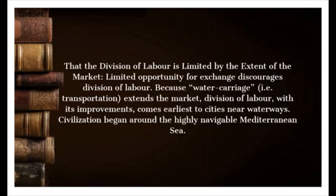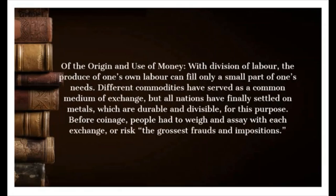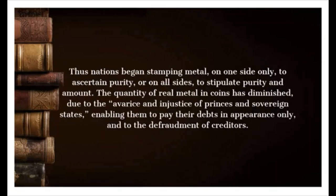Civilization began around the highly navigable Mediterranean Sea. On the origin and use of money: with division of labor, the produce of one's own labor can fill only a small part of one's needs. Different commodities have served as a common medium of exchange, but all nations have finally settled on metals, which are durable and divisible. Before coinage, people had to weigh and assay with each exchange, or risk the grossest frauds. Thus nations began stamping metal — on one side only to ascertain purity, or on all sides to stipulate purity and amount.